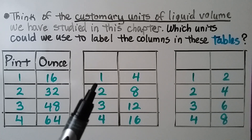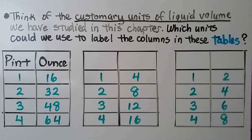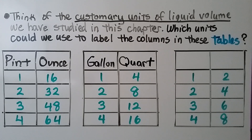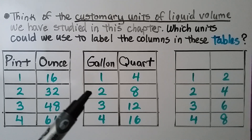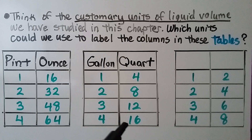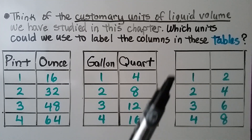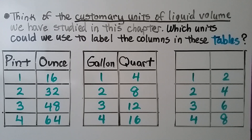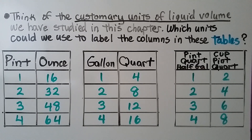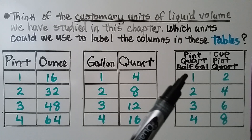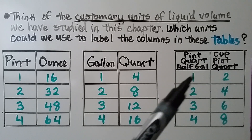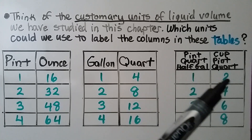For 1 and 4 in liquid volume, gallon and quart is correct: 1 gallon equals 4 quarts, so 2 gallons is 8, 3 gallons is 12, and 4 gallons is 16. For 1 and 2, there are actually several answers: 1 pint is 2 cups, 1 quart is 2 pints, or 1 half gallon is 2 quarts.